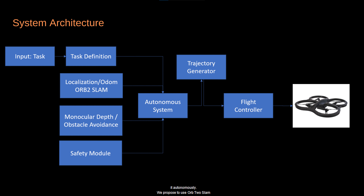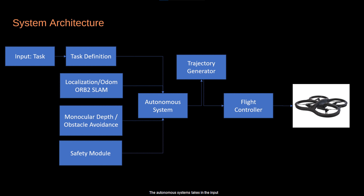We propose to use ORB2 SLAM for monocular vision-based sparse mapping of the environment and localize in it. We also intend to use a machine learning model to predict depth based on monocular vision and to perform dynamic and static obstacle avoidance. A safety module is also used to ensure the safety of the user, aerial agents, and all other assets. The autonomous system takes input from all subsystems and generates waypoints for safe flight.